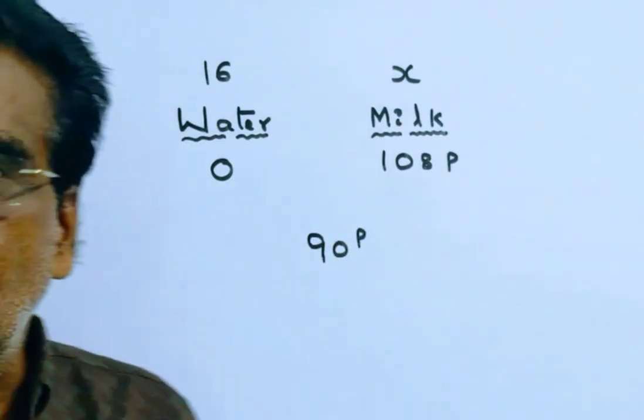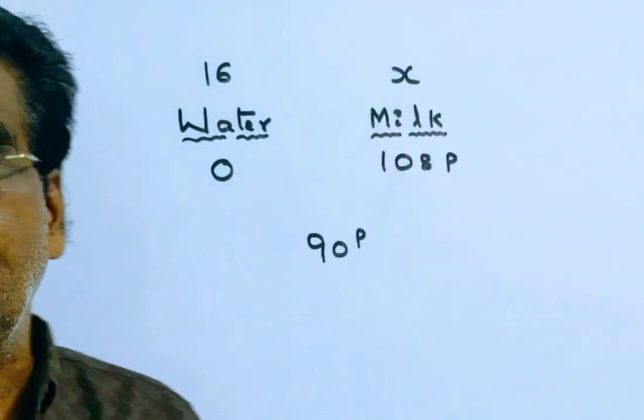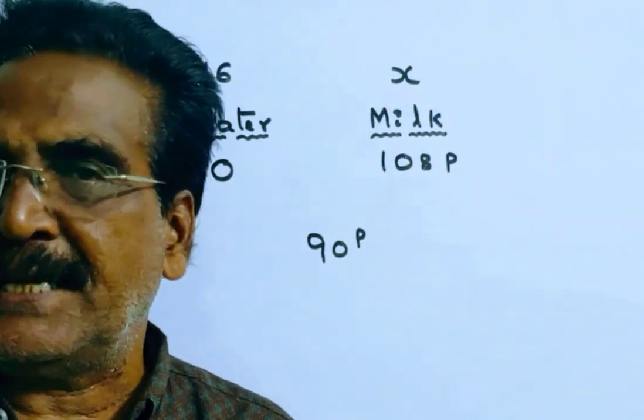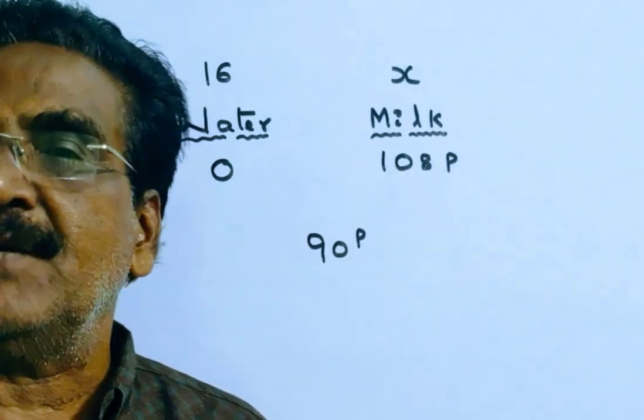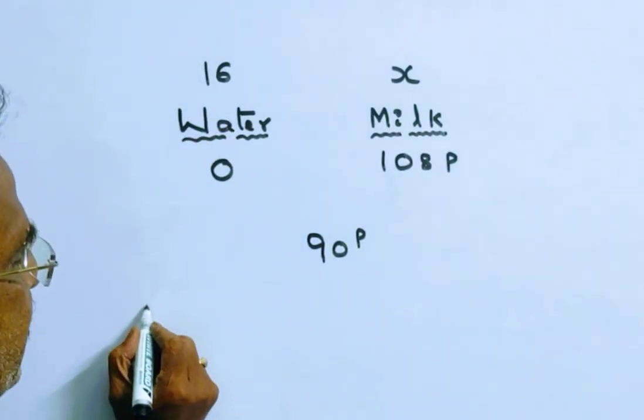This problem can be solved by applying the rule of allegation. We want the quantity of pure milk. By applying the rule of allegation, we get the quantities ratio.